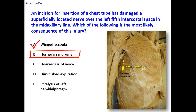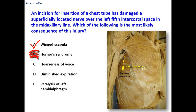Horner's syndrome results from injury of the sympathetic trunk — specifically the upper part of the thoracic sympathetic trunk — depriving the sympathetic fibers destined for the head and neck. That is why the patient presents with this syndrome, which consists of ptosis, miosis, anhydrosis, and flushing of the face.